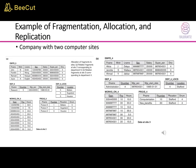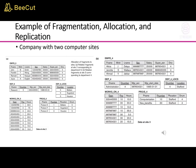Consider an example of fragmenting and distributing a company database. Suppose the company has three computer sites, one for each department. Sites 2 and 3 are for departments 5 and 4 respectively. At each site, we expect frequent access to employee and project information for employees in that department and projects controlled by that department. These sites mainly access the name, SSN, salary, and super_SSN attributes of the employee.